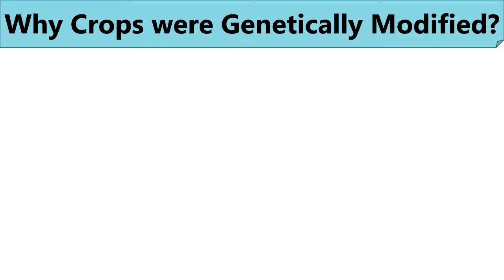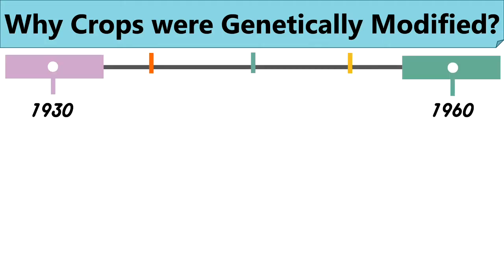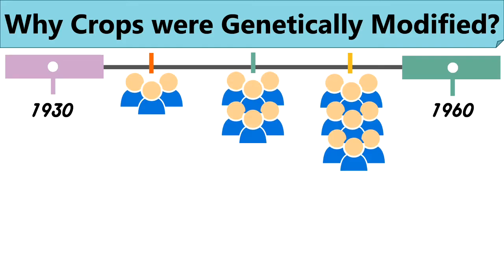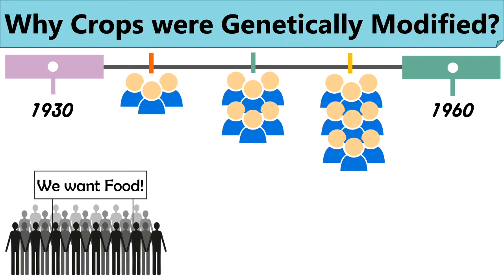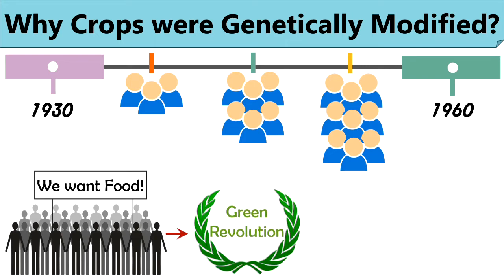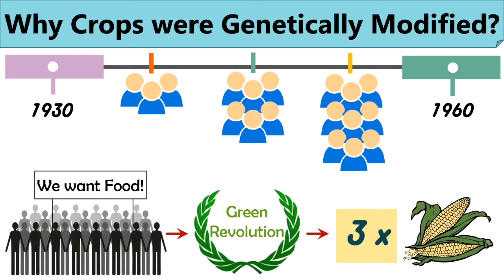In order to understand genetically modified crops, firstly you need to know why they were introduced. In the years between the 1930s to 1960s, the world population experienced tremendous growth leading to the shortage of food products. The conventional methods were incapable of sufficing this huge need. At this time, the green revolution came into existence, which mainly focused on high yielding crop varieties and use of chemical fertilizers and pesticides. These two approaches tripled the food production but still were insufficient at curbing the existing demand. Moreover, the constant use of chemical fertilizers and pesticides polluted the soil and water bodies.